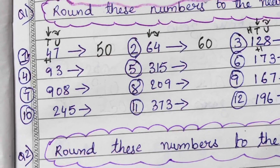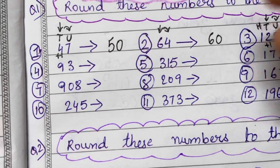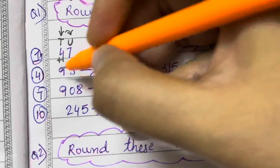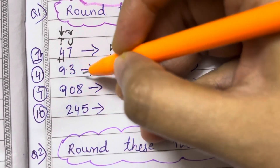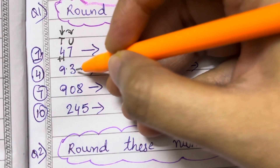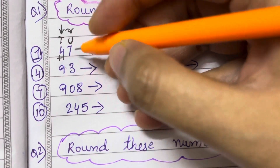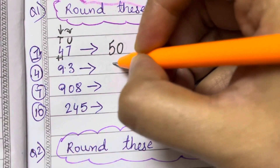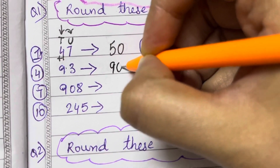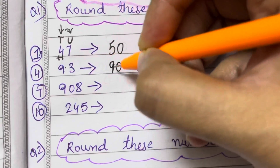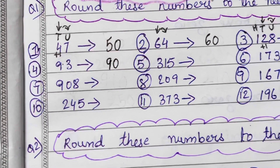Now 93. The tens place is 9, and the digit after that is less than 5. So 9 is not going to change and we will have a 0 in place of 3. That is 90.